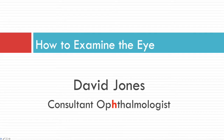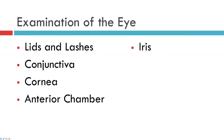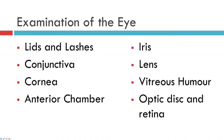We've already established how to take a history and test the visual acuity, and are now working our way through the structures of the eye in a systematic and anatomical way. This video is about how to assess the anterior chamber.